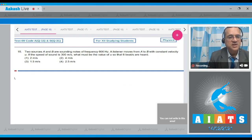Question number 15: Two sources A and B are sounding notes of frequency 600 hertz. A listener moves from A to B with constant velocity u. If the speed of sound is 300 meter per second, what must be the value of u so that 6 beats are heard? These are the four options.